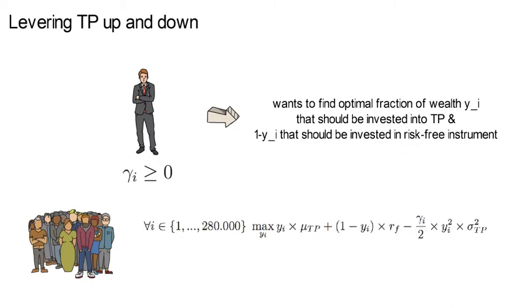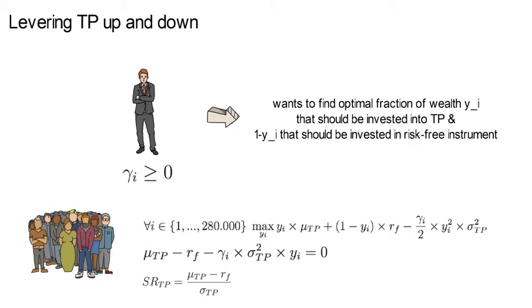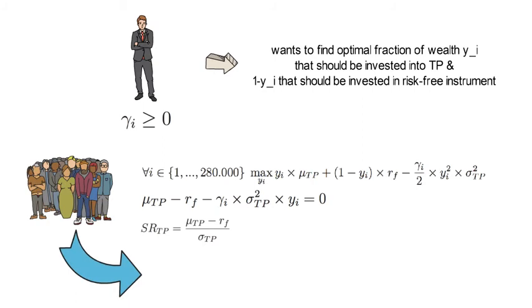The first order condition would look as follows. We set that to 0 and then we solve for the optimal fraction of wealth that employee i invests into the tangency portfolio. And finally, the optimal allocation for employee i would be to invest yi star into the tangency portfolio and 1 minus yi star into the risk-free asset.